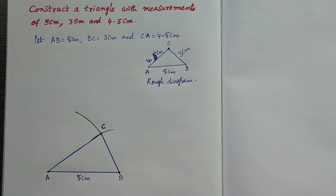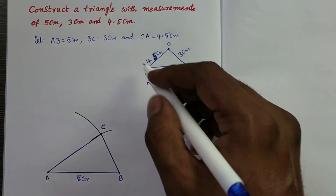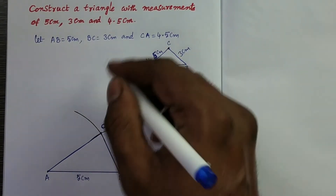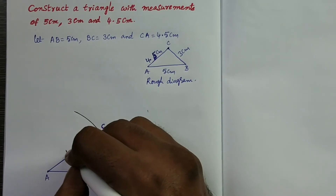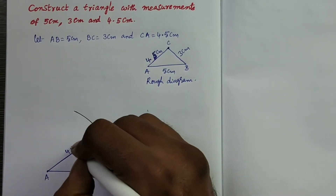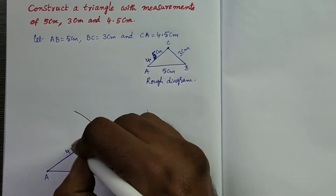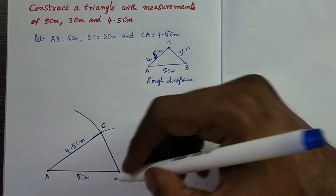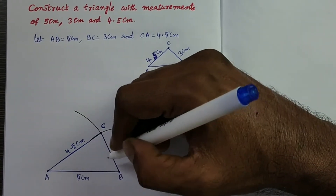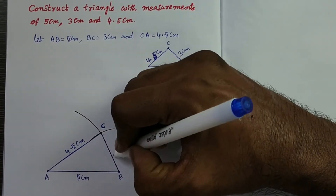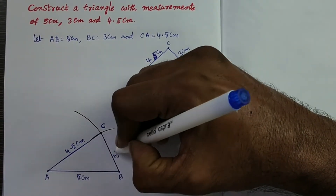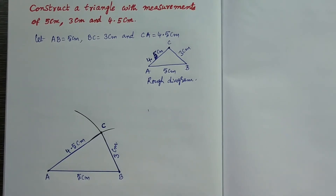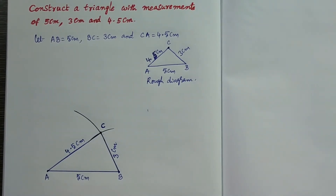Now join AC and BC. This is the required triangle with the given measurements. Mark the measurements: AC is 4.5 cm and BC is equal to 3 cm. The construction is over.